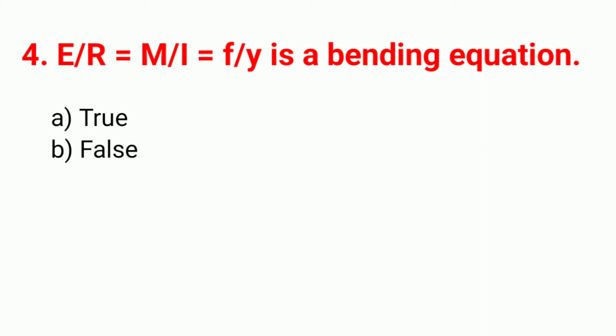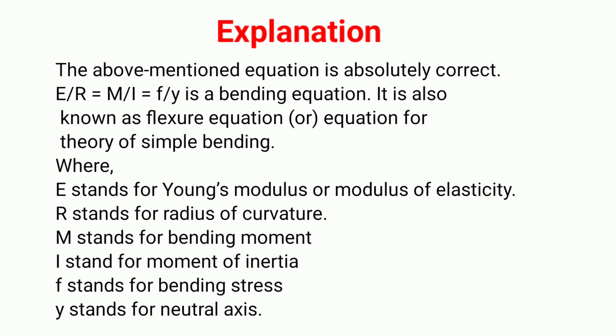Question 4: E/R = M/I = F/Y is the bending equation, also known as the flexure equation or equation for the theory of simple bending. Here E stands for Young's modulus, R for radius of curvature, M for bending moment, I for moment of inertia, F for bending stress, and Y for the distance from the neutral axis.